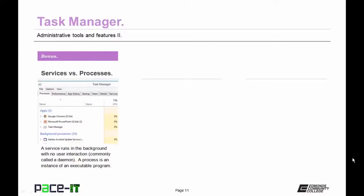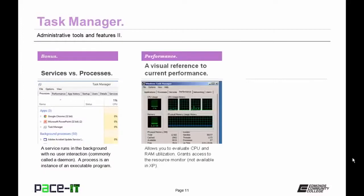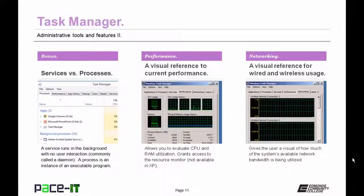What's the difference between a service and a process? A service runs in the background with no user interaction — it's often called a daemon. A process is an instance of an executable program. The Performance tab shows a visual reference of current system performance — you can evaluate CPU and RAM utilization, and it grants access to the resource monitor, except in Windows XP.